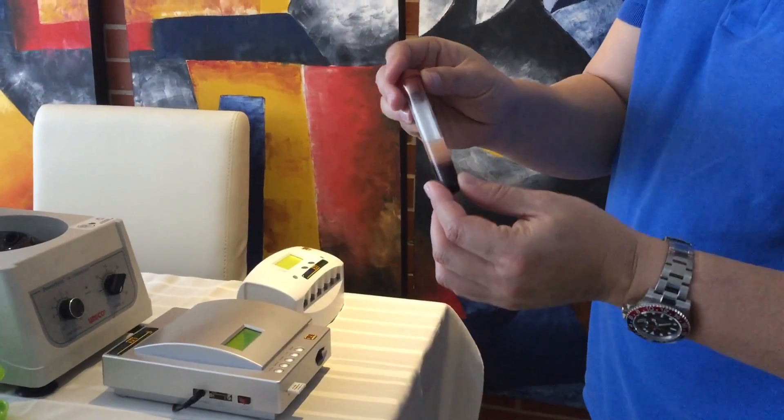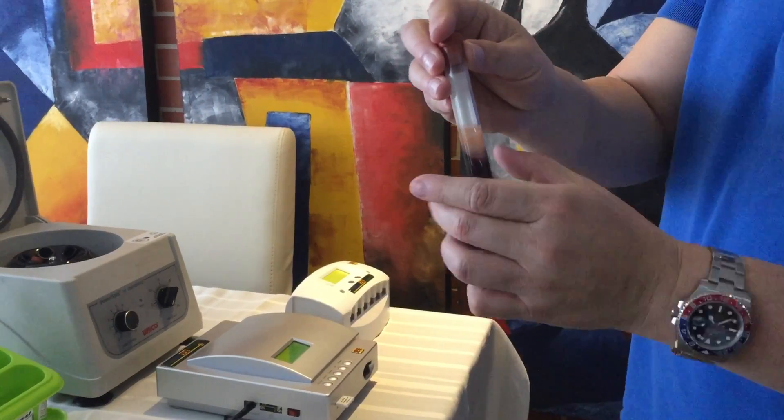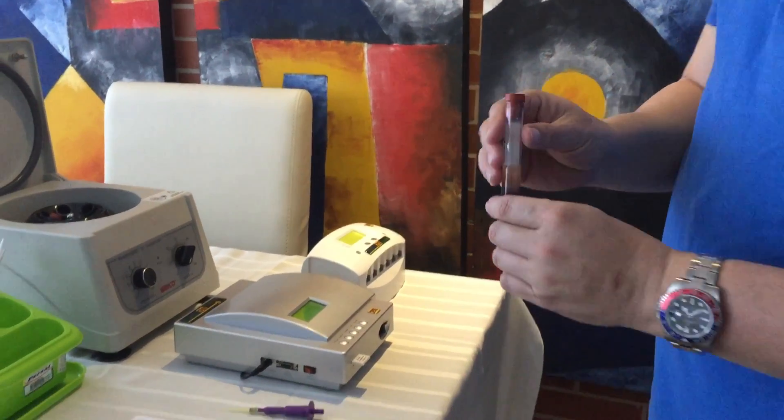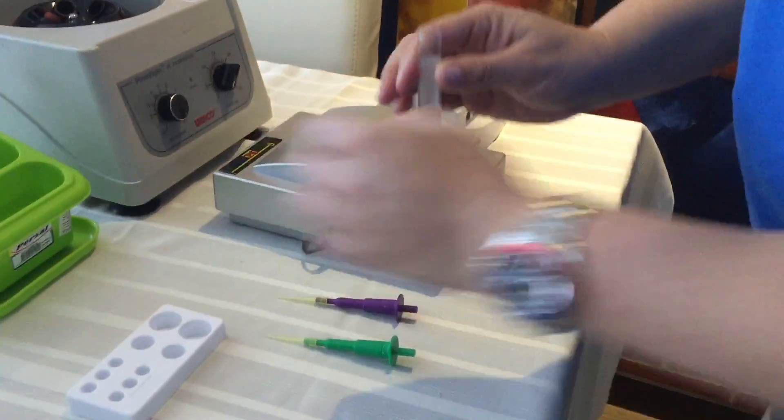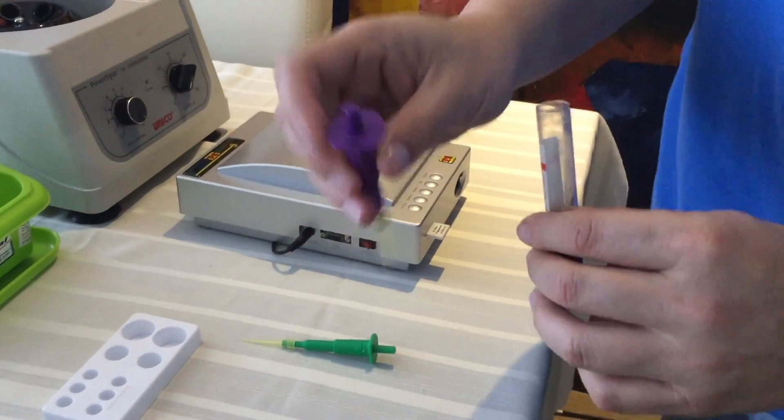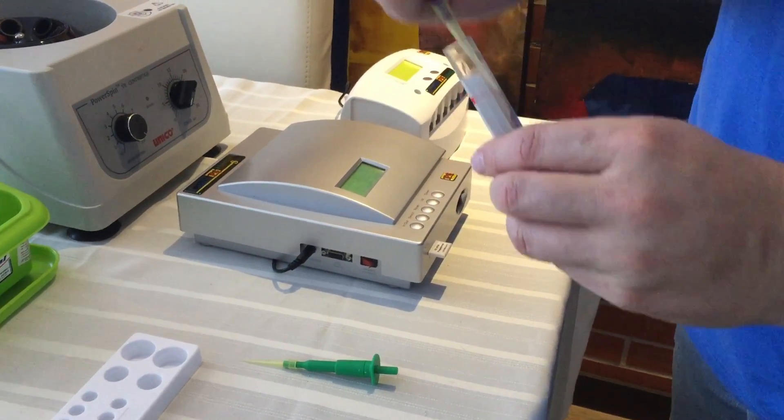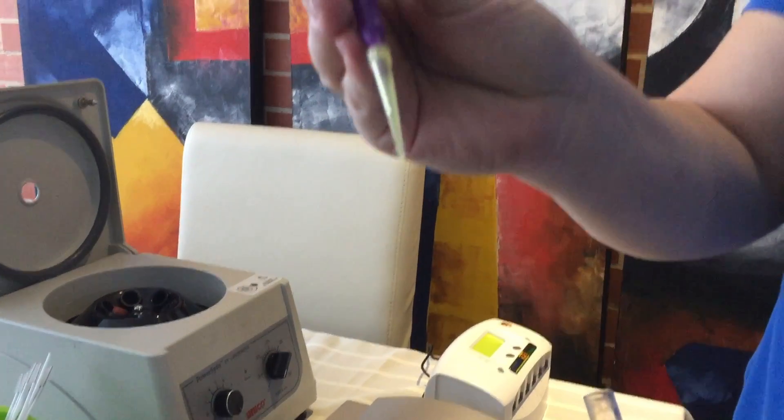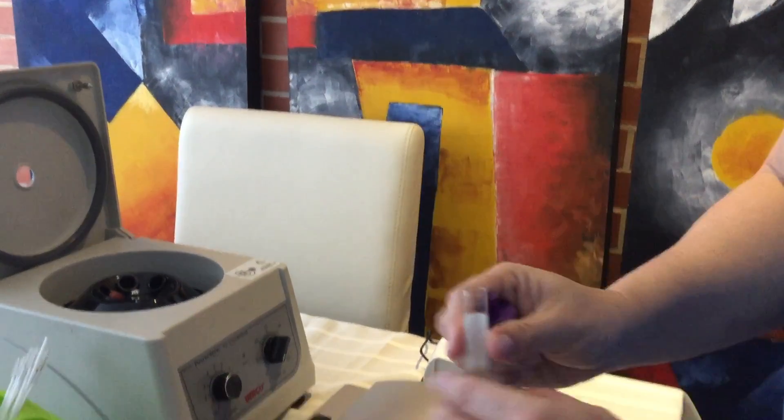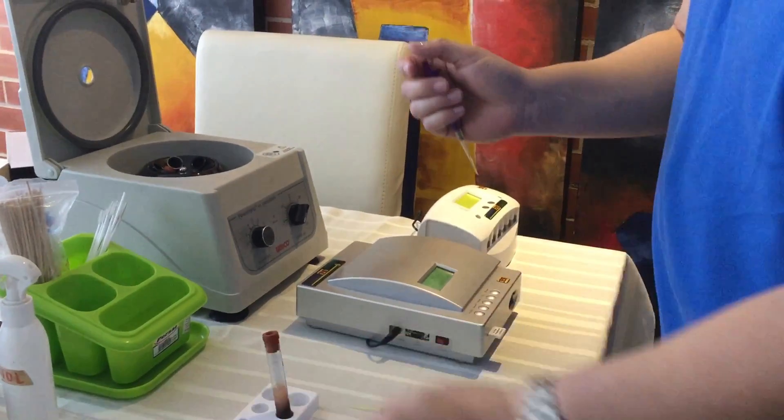So, we have the blood spun. You want to make sure it's nice and clear. And we're going to do the progesterone test right now and the P4 analyzer. And then we're going to get 30 microliters of serum. Make sure there's no bubbles. Yesterday she was at 1.48 nanograms.